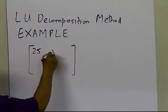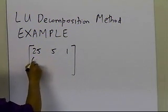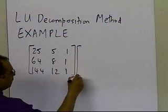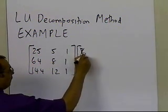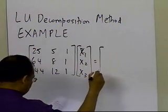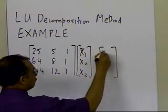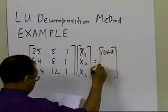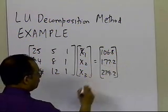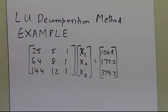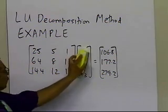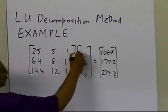The coefficient matrix is: 25, 5, 1; 64, 8, 1; 144, 12, and 1. The unknown vector is x1, x2, x3, and the right-hand side is equal to 106.8, 177.2, and 279.2. So you are given this three-equation, three-unknown system, and what you want to do is find out what x1, x2, and x3 are.